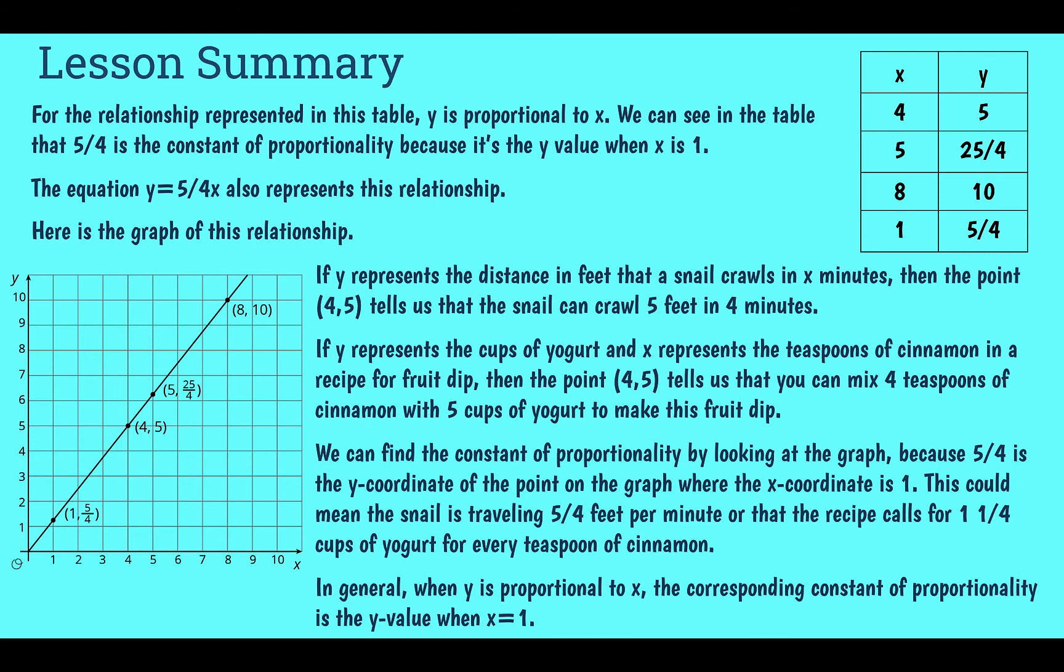If we want to find our constant of proportionality from the graph, we look for the y value when the x coordinate is 1. If it gets too complicated, finding from a graph, we can always turn our graph into a table or into an equation and go from there.